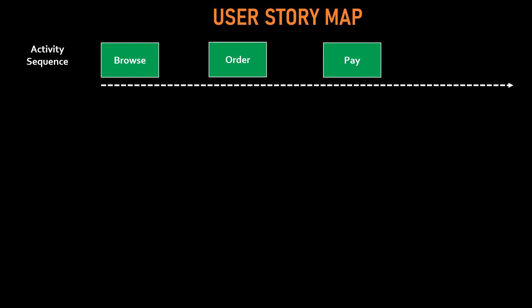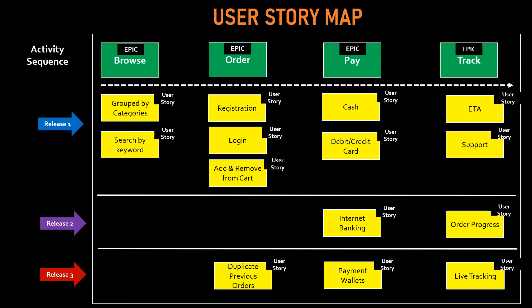If you're not familiar, this is how the user story map looks. It is a series of epics with an activity sequence from left to right — the steps the user would take to achieve the objective. Here, users will be able to browse available foods, order them, pay for it online, and then track it until they receive it. Below those activities are the user stories, and we also talked about how they will be grouped into releases — release one, release two, release three — with the highest value items delivered first and subsequent releases following.